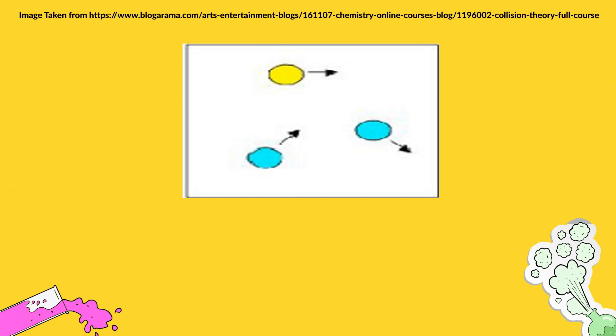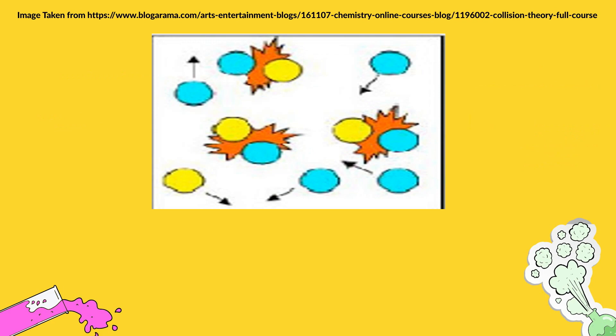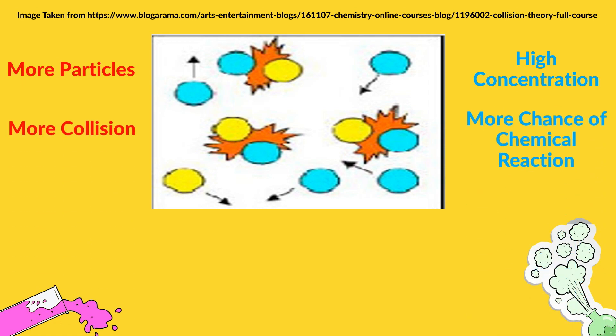As you can see from the picture, we are shown only a few particles. This can be described as having a low concentration of particles, which causes less collisions, leading to less chance of chemical reaction. And this is how collision theory affects concentration.